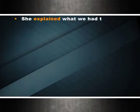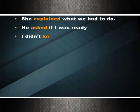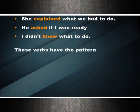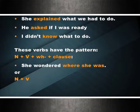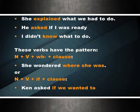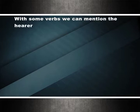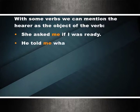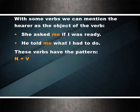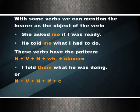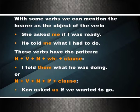Reporting verbs with WH and if clauses: some verbs introduce summaries, reports, questions, or problems using WH or if clauses. Examples: she explained what we had to do; he asked if I was ready; I didn't know what to do. These follow the pattern N + V + WH + clause or N + V + if + clause. With some verbs, the hearer can be mentioned as the object: she asked me if I was ready; he told me what I had to do; I told them what he was doing; Ken asked us if we wanted to go.